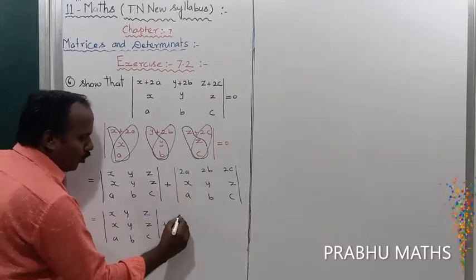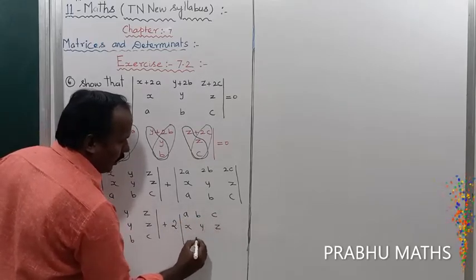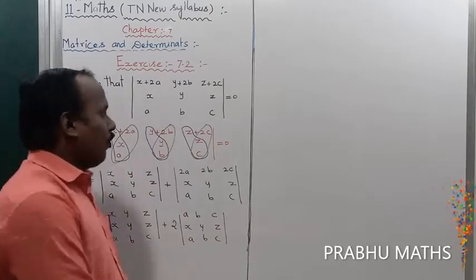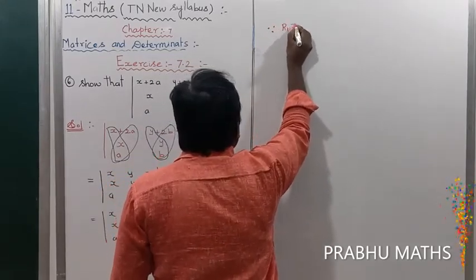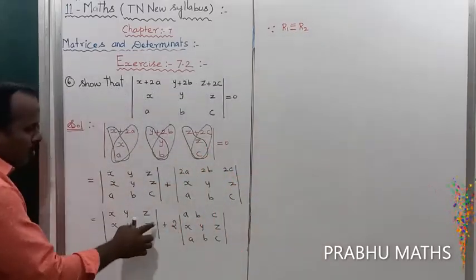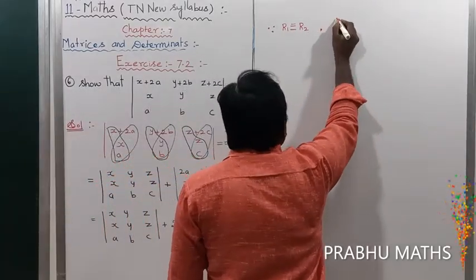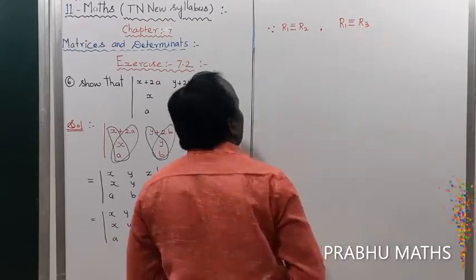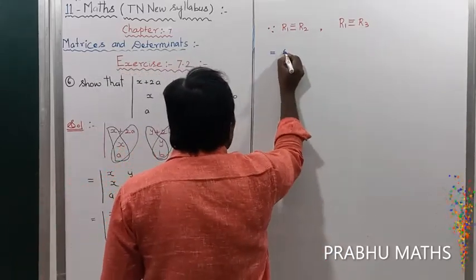Taking the common value of 2 from R1, the remaining values are A, B, C — then X, Y, Z — then A, B, C. Now for the first determinant, R1 is identically equal to R2. For the second determinant, R1 is identically equal to R3. Since any two rows or columns are equal, that determinant is going to 0.